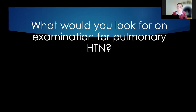I'd palpate the precordium, feeling for a right ventricular heave in particular, and auscultate for a pansystolic murmur of tricuspid regurgitation. Moving to the lungs, I'd look for coarse crepitations at the bases indicating left ventricular dysfunction and pulmonary edema, and fine crepitations as may be present in interstitial lung disease. In the abdomen, I'd palpate for an enlarged pulsatile liver and signs of hepatic congestion. Finally, I'd check the legs for pitting edema from elevated venous pressure. For bedside tests, I'd perform an ABG on room air, calculate the A-a gradient, look for elevated bicarbonate suggesting OSA or obesity hypoventilation syndrome, and conduct a peak flow test for restrictive or obstructive lung disease.